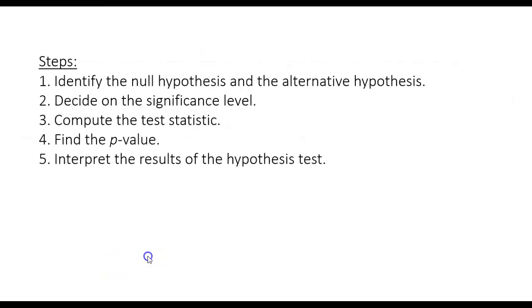Let's go ahead and review those steps. First, we're going to identify the null and alternative hypothesis. Then we'll decide on the significance level. We'll compute the test statistic and use that to find the p-value. Next and last, we'll interpret the results of the hypothesis test. Let's get going.